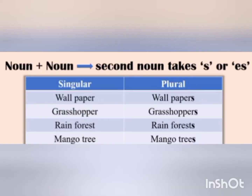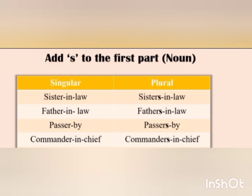Compound nouns generally form their plurals by adding s or es to the main word or the last word. For example: wallpaper → wallpapers, grasshopper → grasshoppers, rainforest → rainforests, mango tree → mango trees.